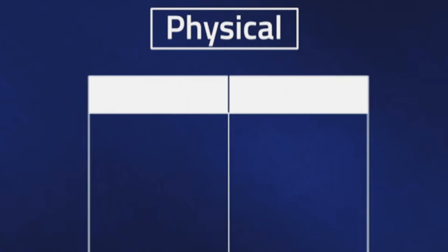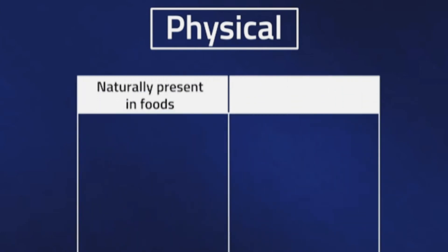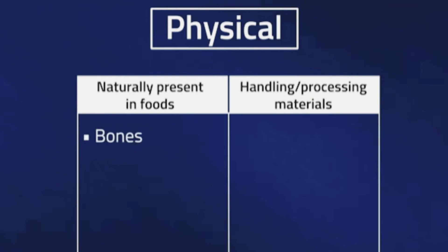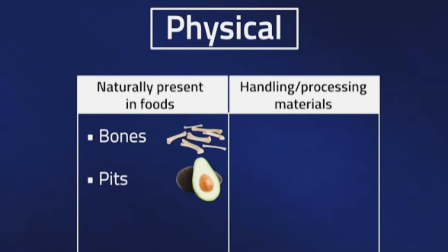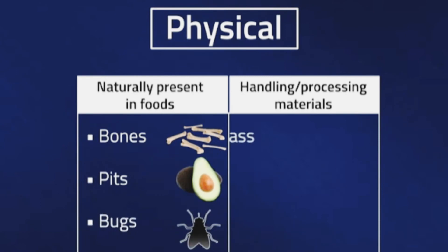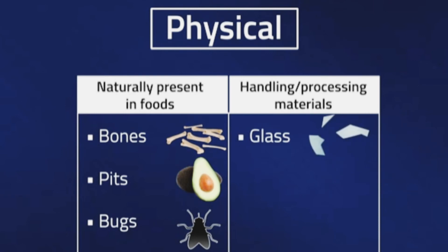And we have physical hazards — hazards which are naturally present in food, such as bones, pits, and bugs. And then we have handling and processing materials, which include glass, metal, and hair.